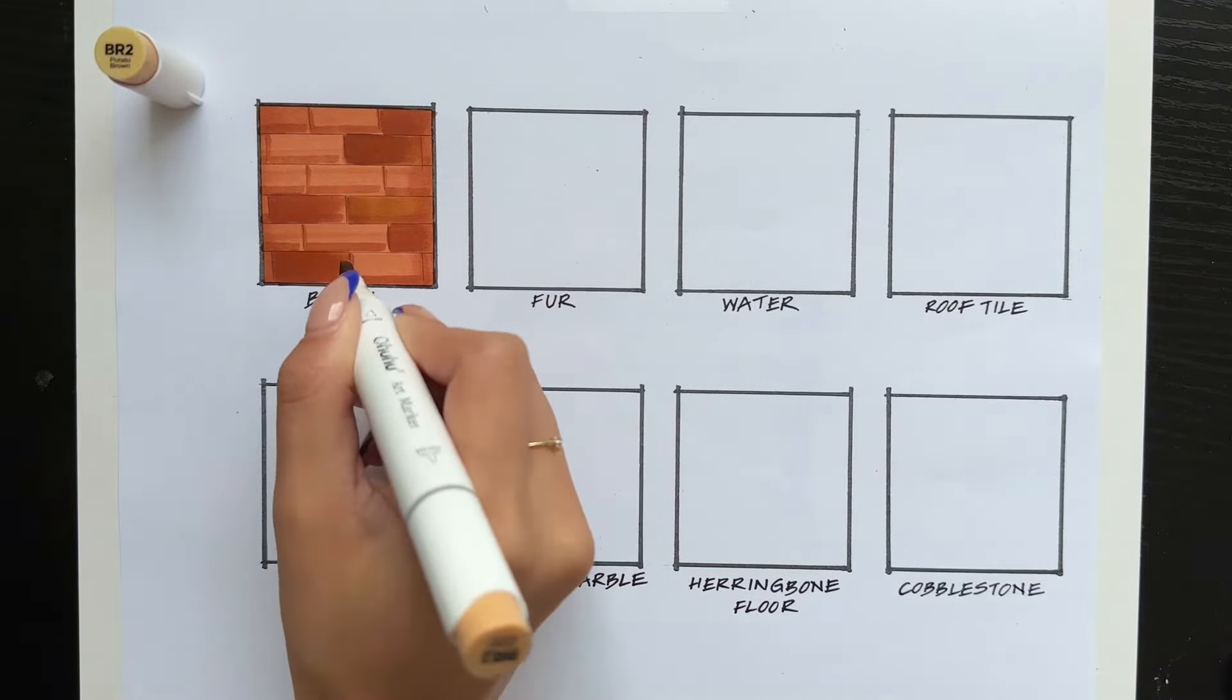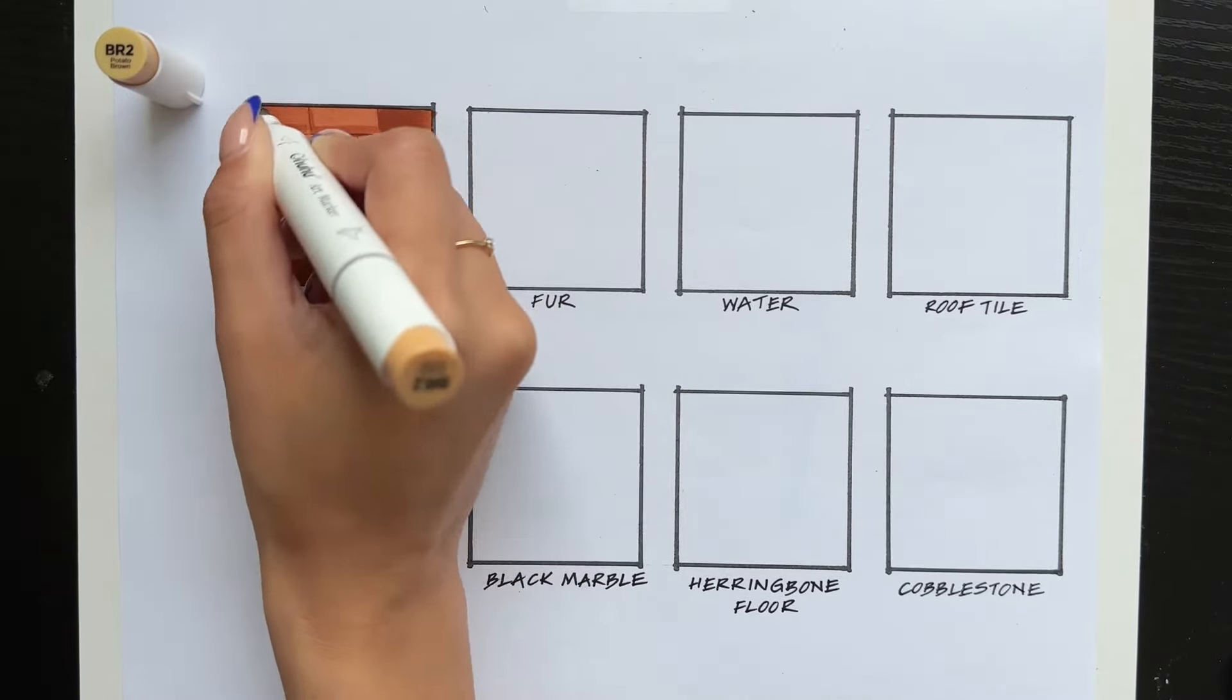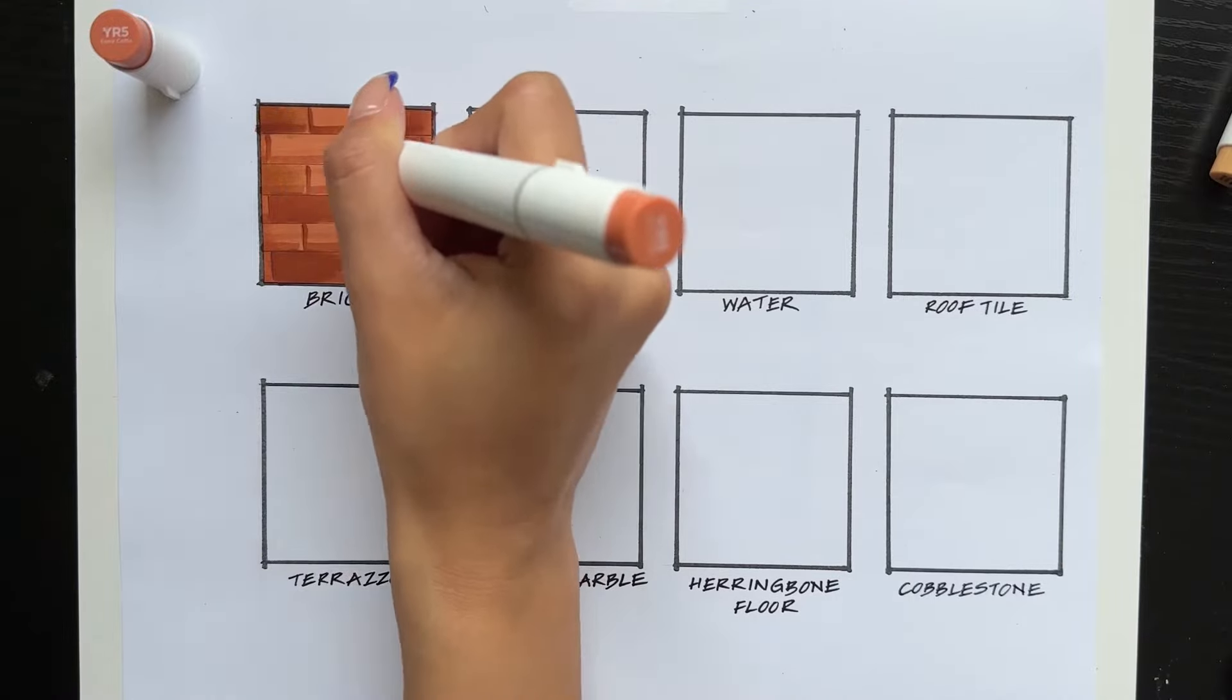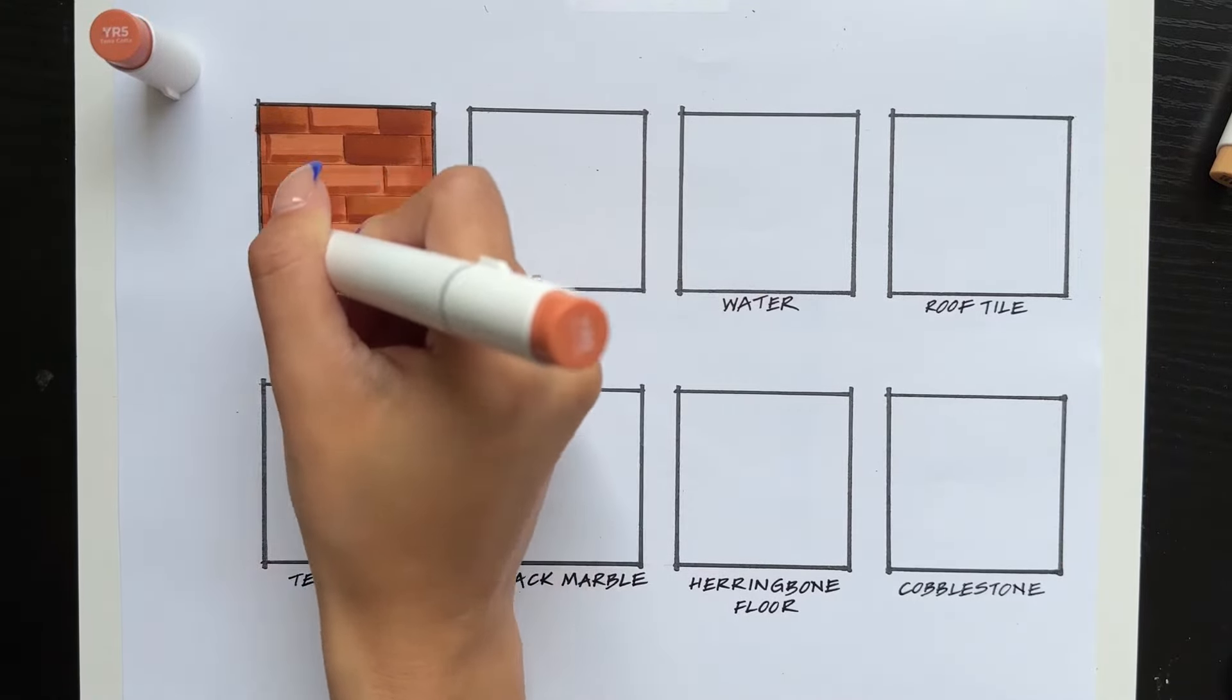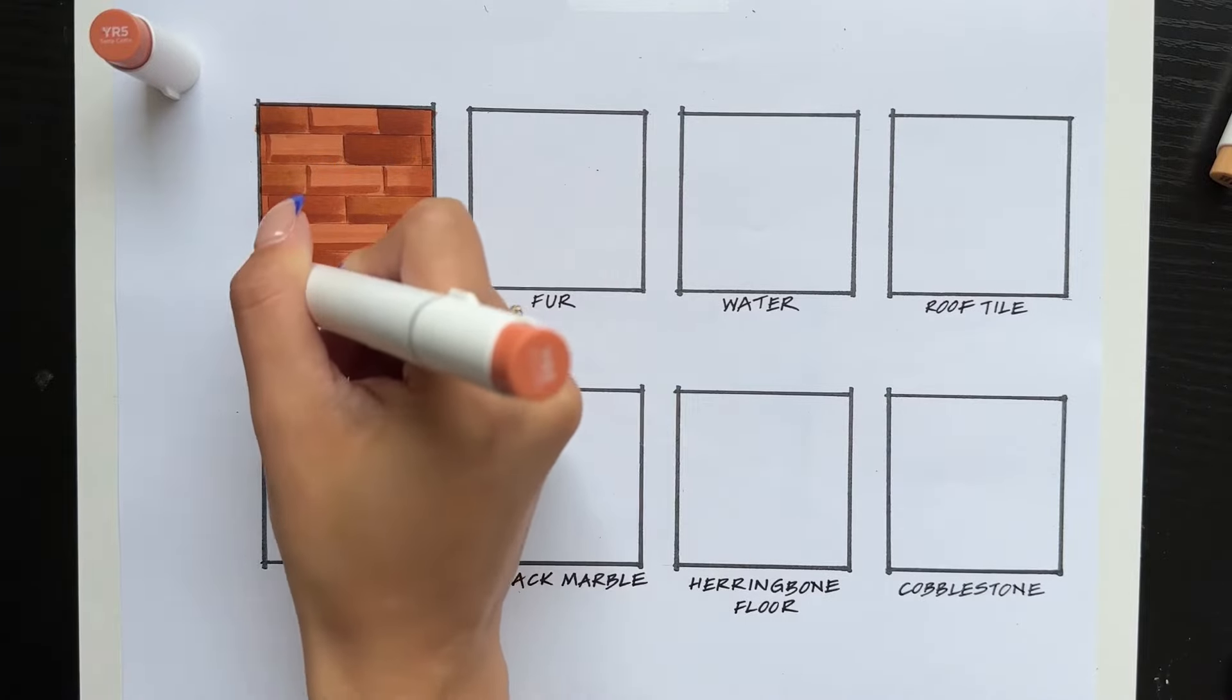And then I'm just taking another color, BR2, and again, highlighting some other bricks, just to create some variation. Then I'm just going over the bottom part of the brick and the vertical lines once again.